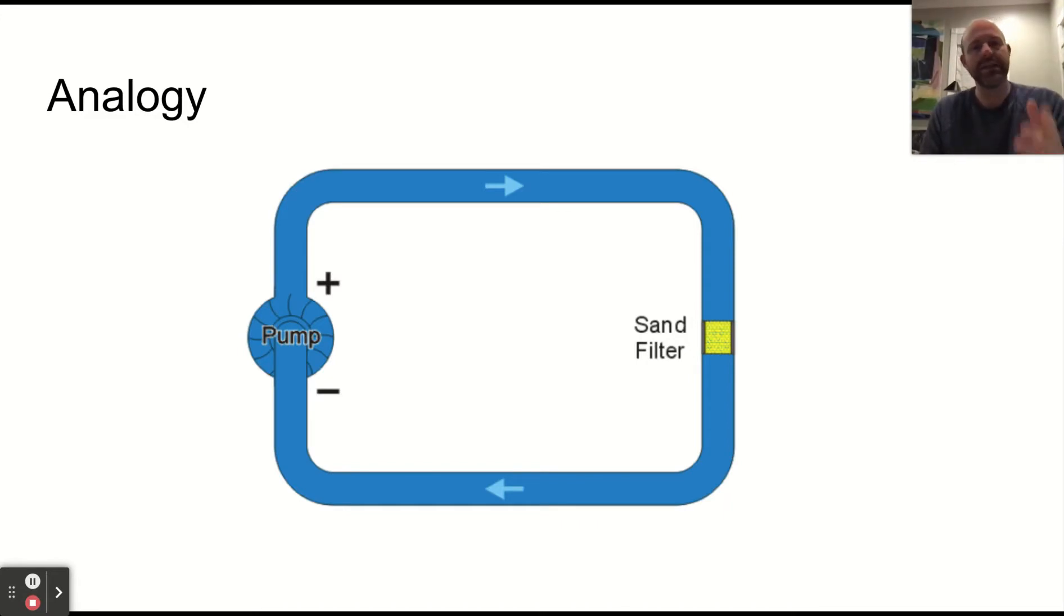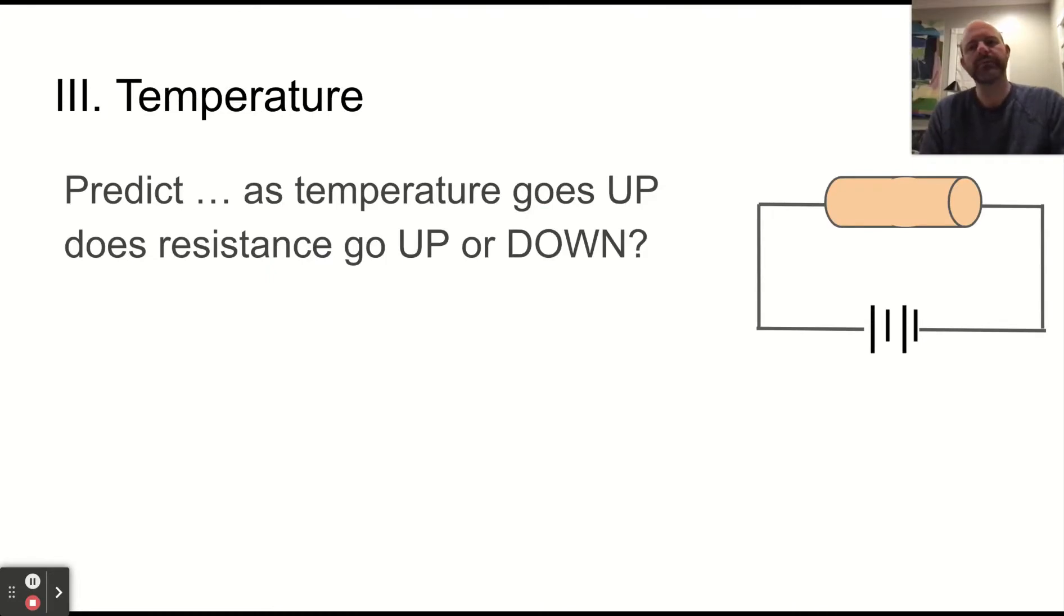The analogy is that if you have a pump pumping water around a loop and you put something like a filter in that loop, you will slow down the flow of water. And that's what a resistor does.